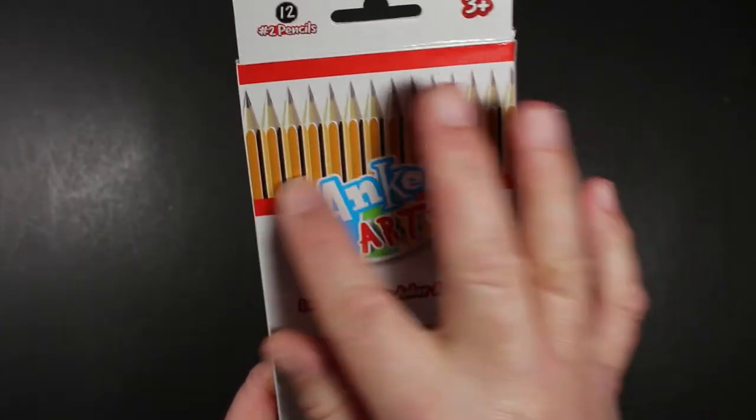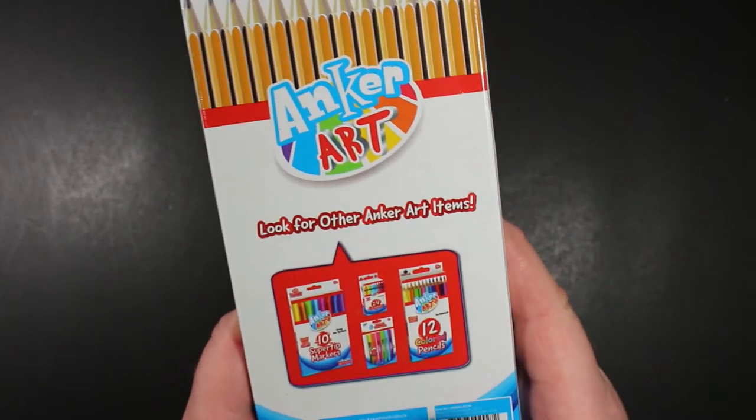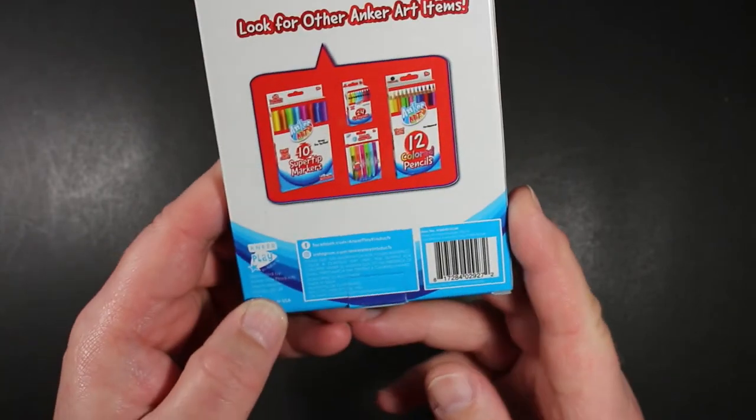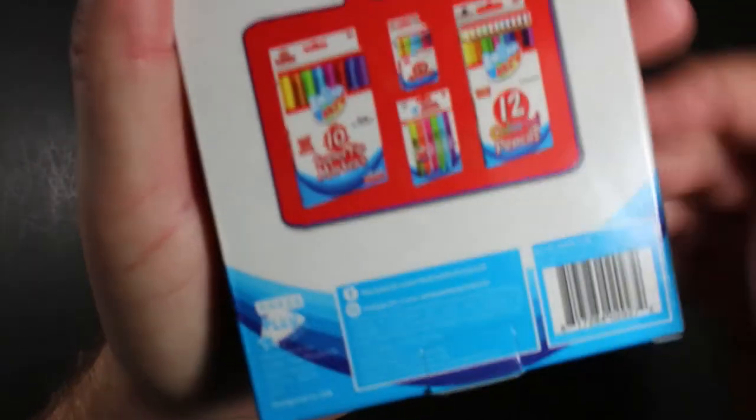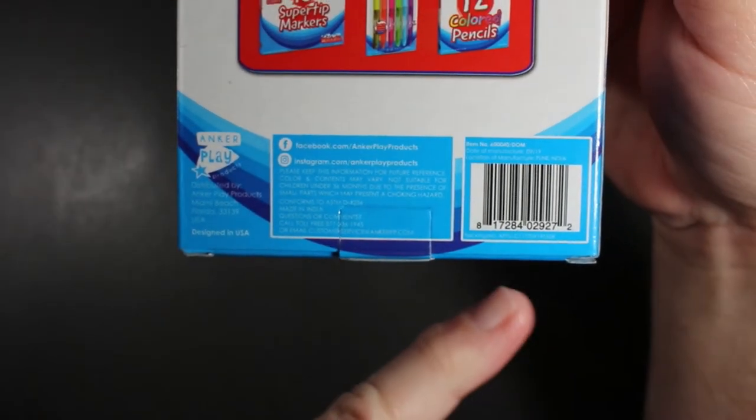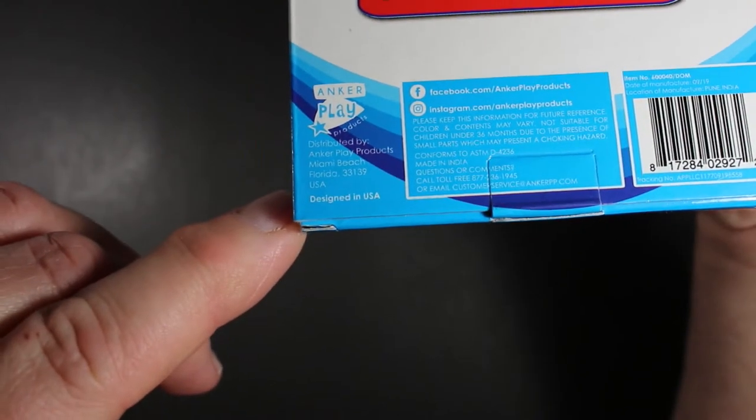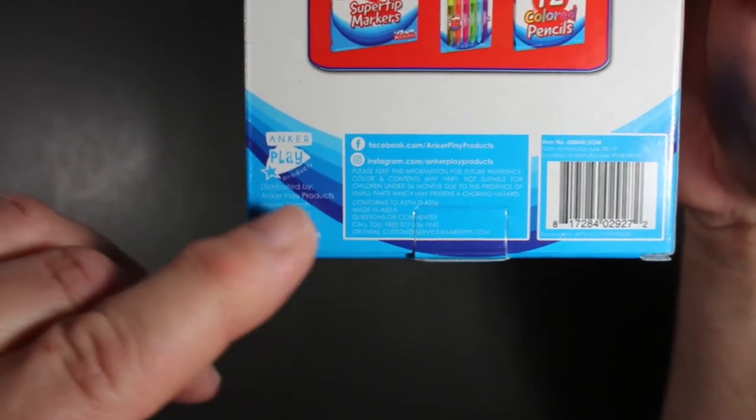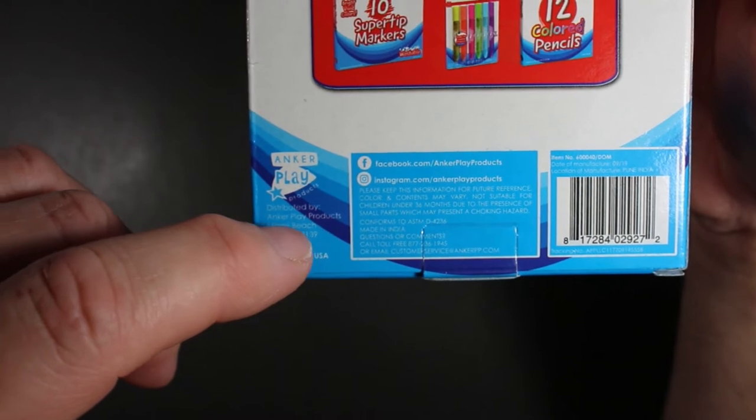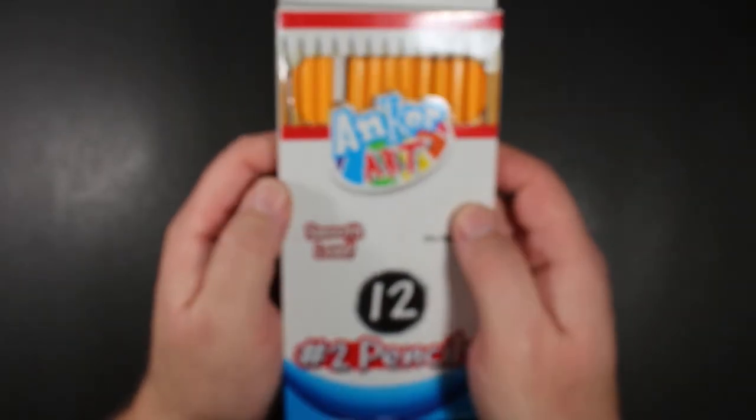On the back, I like it's got the pencils printed on the paper. Anchor Art products I'm unfamiliar with, but they have markers, crayons, and colored pencils. At the bottom you've got your UPC code, Anchor Play Products out of Miami Beach, Florida. It says designed in USA and in tiny print it's got your Facebook and Instagram pages for Anchor Art, and then it says made in India.